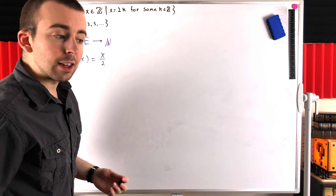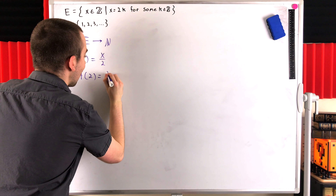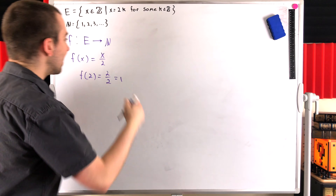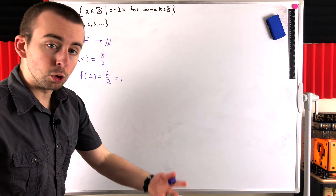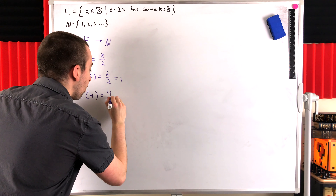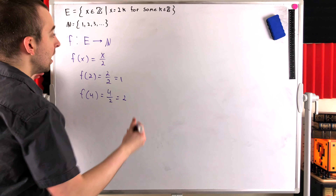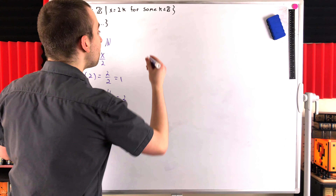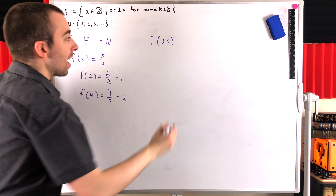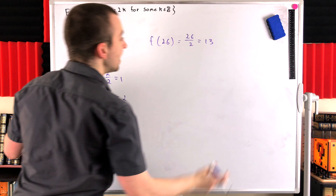Perhaps we can define our function as f of x equals x over 2. Then if we want to get the first natural number, 1, we could just plug in 2, and we'd get 2 over 2, which is 1. If we wanted to get the natural number 2, we could plug in 4, and f of 4 equals 4 over 2, which is 2. Let's do one more — what if we wanted to get the natural number 13? We could plug in 26, and our function just takes out that factor of 2, giving us back 13.